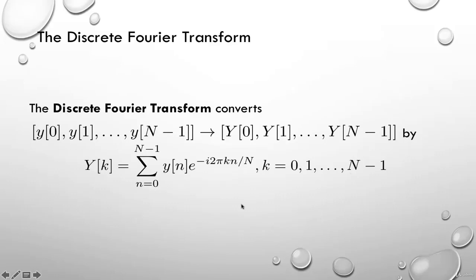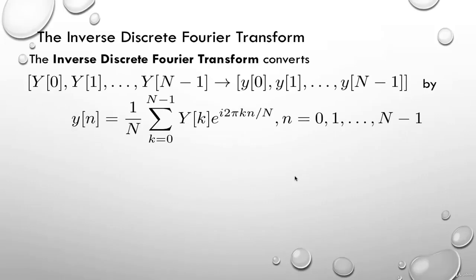If you were to program this, it's very simple — just a loop that adds up a bunch of numbers. To compute all Fourier coefficients, you use nested loops. In the homework for this lecture, we'll actually program this two ways: using nested loops, and then using NumPy with just one loop. The inverse discrete Fourier transform takes the Fourier coefficients and converts them back; this formula is given for completeness.